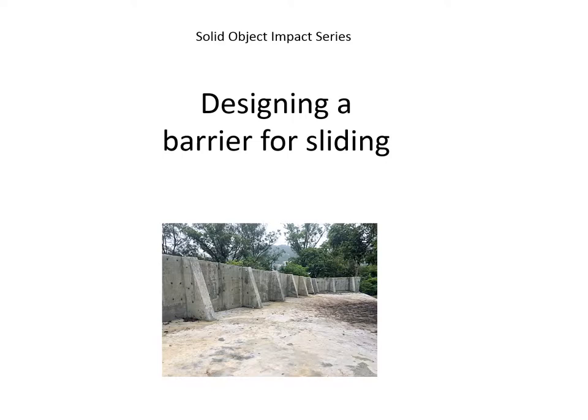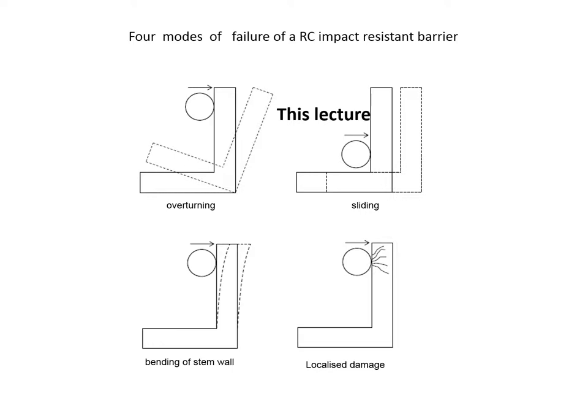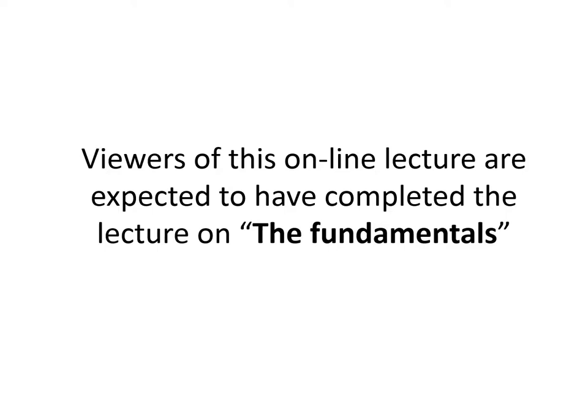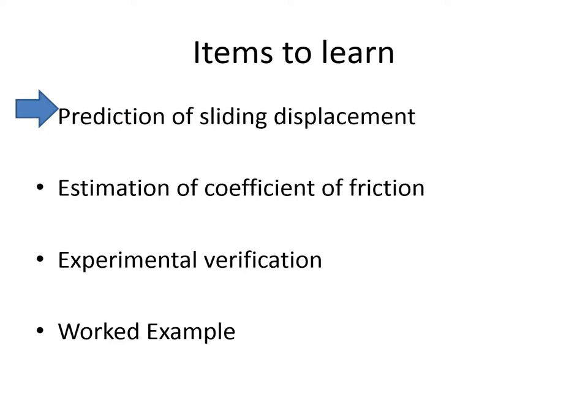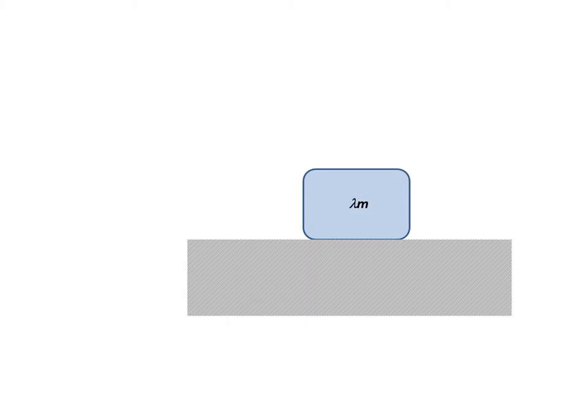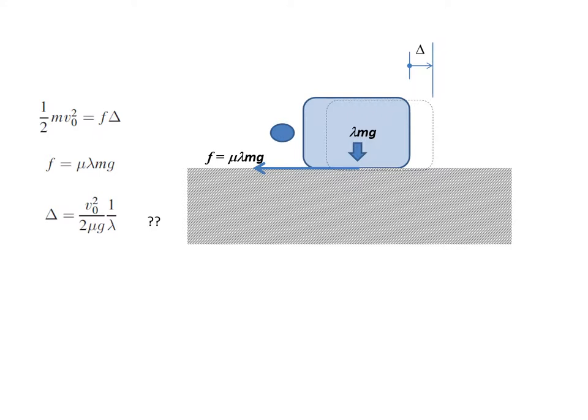Designing a barrier for sliding: prediction of sliding displacement forms part of the design process. Consider an impactor striking an object sliding on the surface at velocity V0, with momentum mV0 and kinetic energy ½mV0². Intuitively, the amount of sliding displacement can be obtained by simply equating ½mV0² with the amount of energy dissipated by friction, which is F times delta. But is that correct?